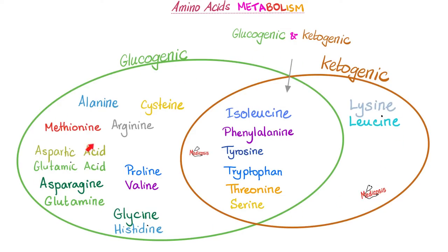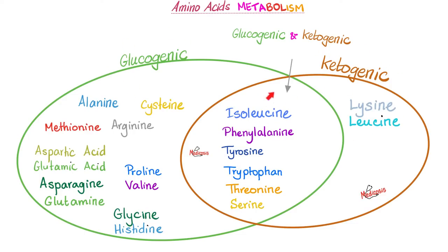Of the 20 amino acids, most — shown in the green circle — can give you glucose, so we call them glucogenic amino acids. Only two amino acids cannot give you glucose but can turn into ketone bodies, so we call them ketogenic amino acids: lysine and leucine. Others in the middle can give you glucose or ketone bodies — glucogenic and ketogenic. So valine is glucogenic, leucine is ketogenic, but isoleucine is both.